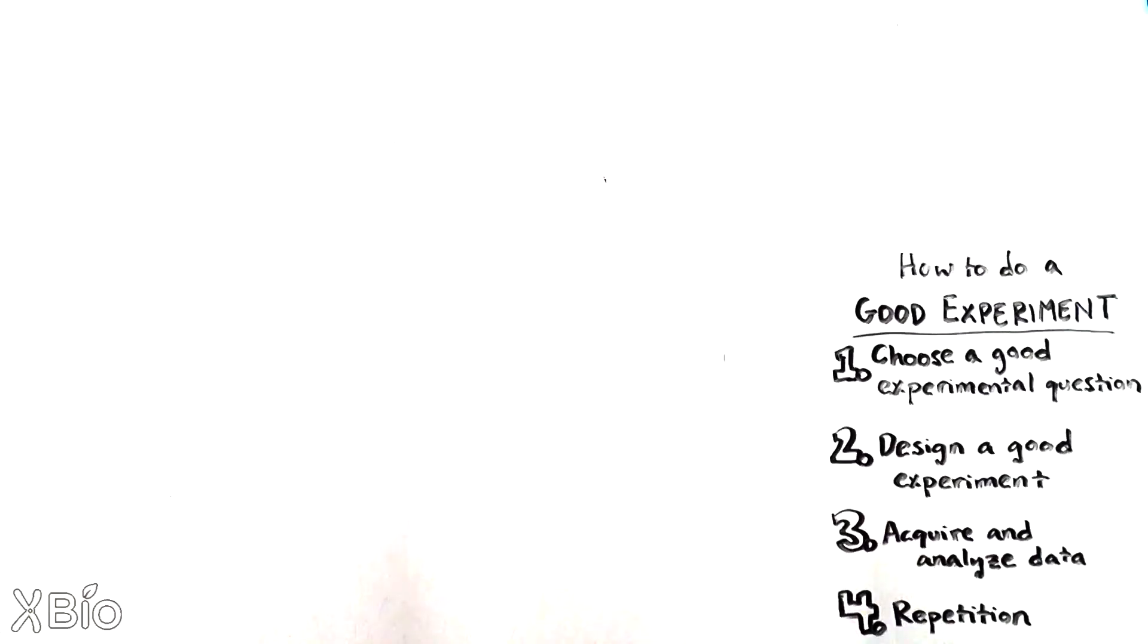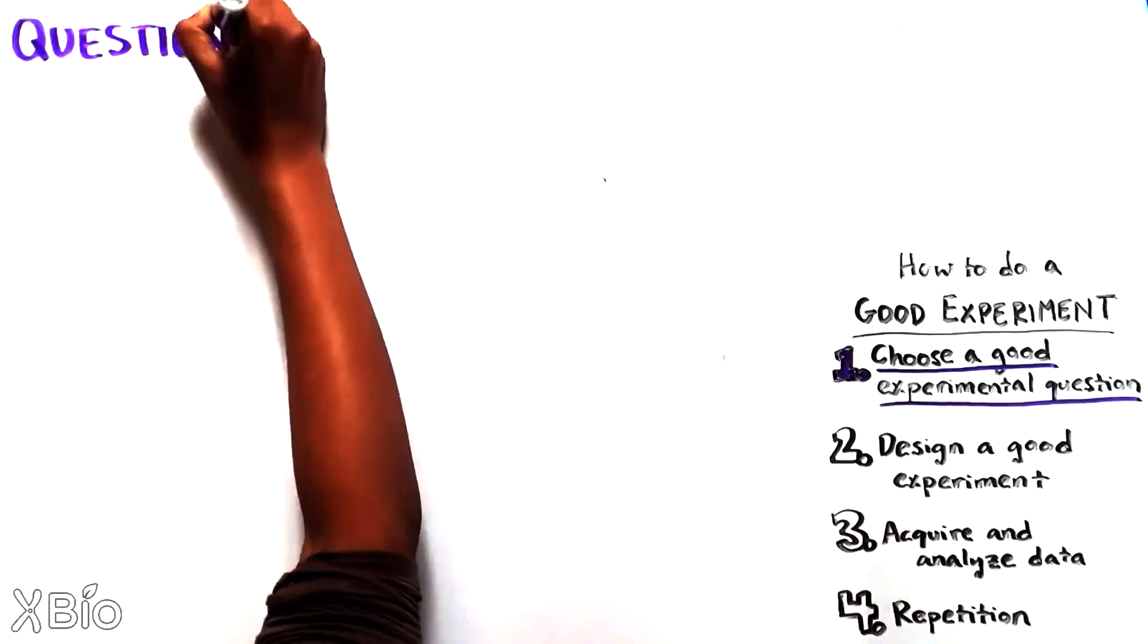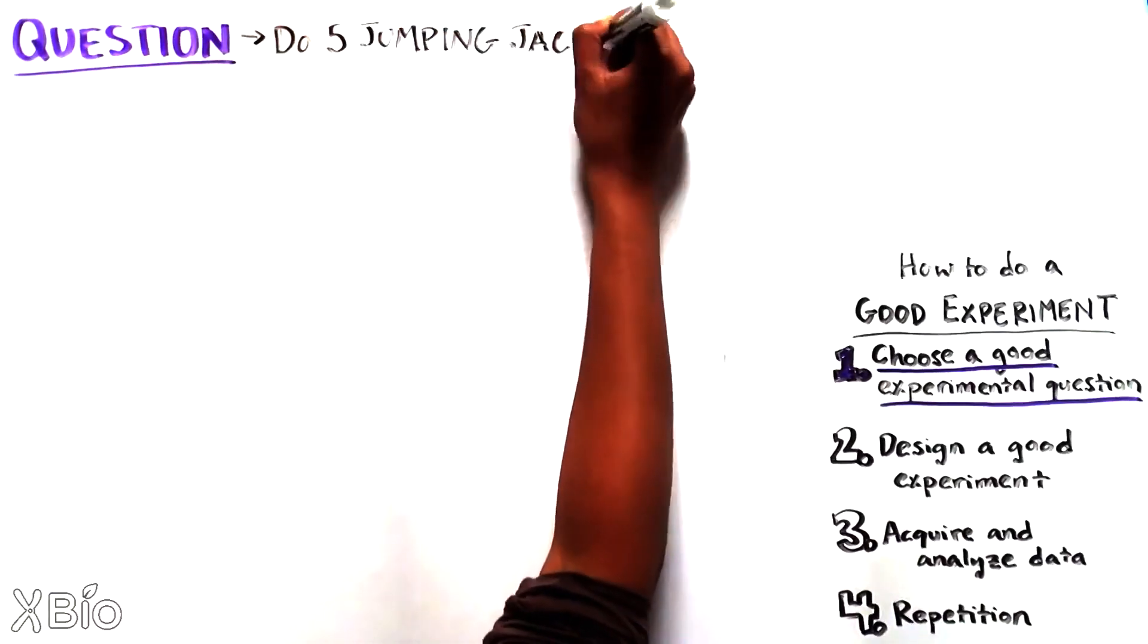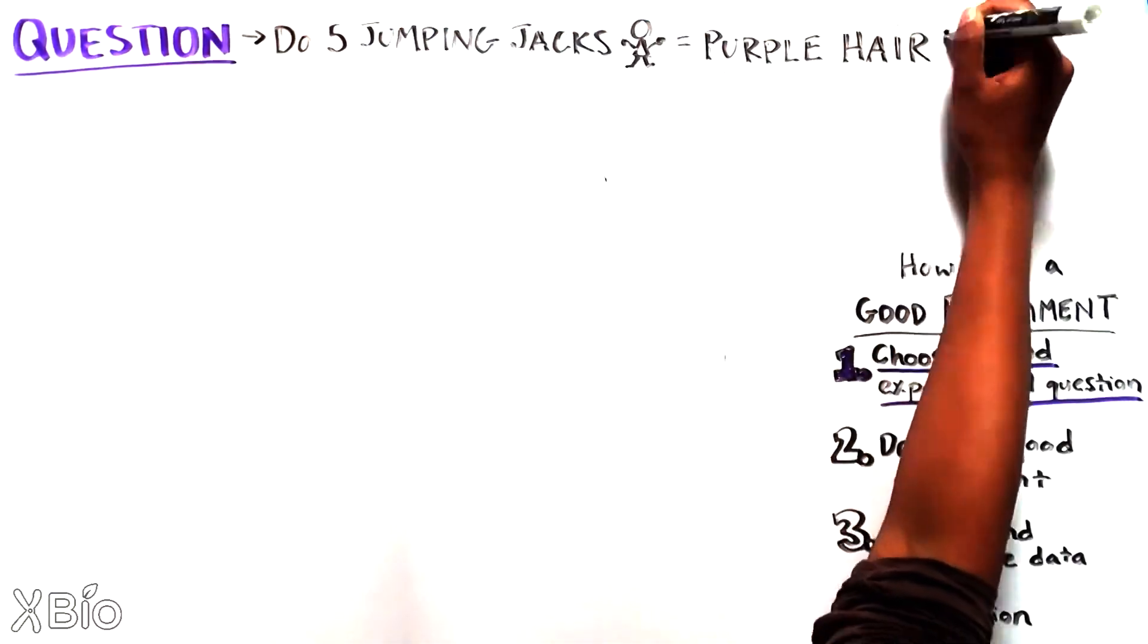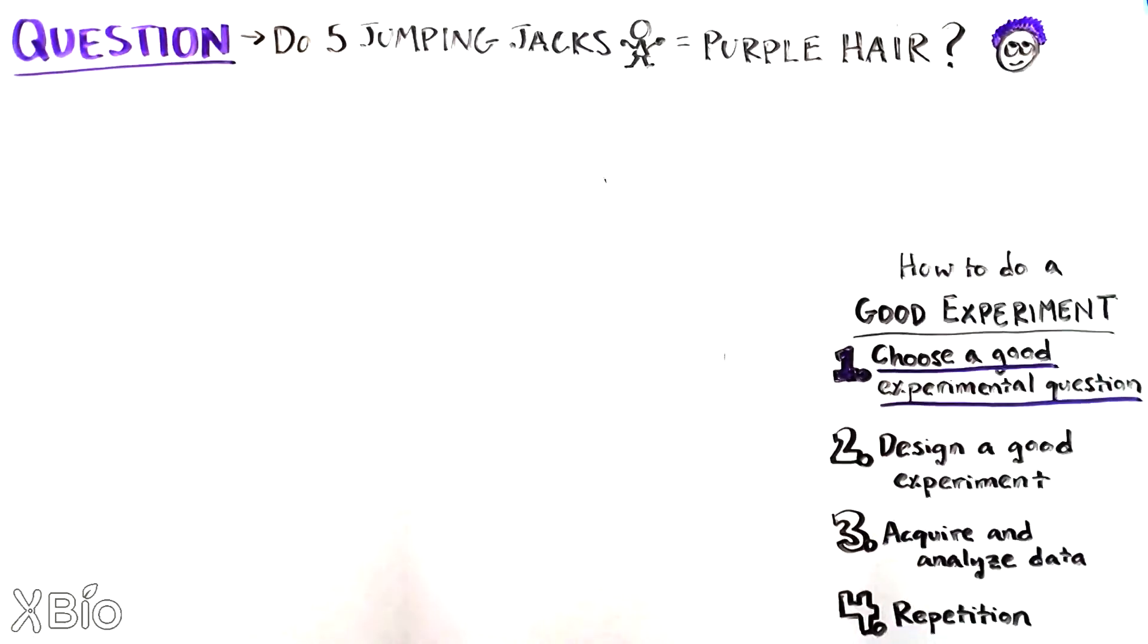The important first step is to choose a particular question we're eager to answer. Let's pick a totally crazy question. If people do five jumping jacks as soon as they get out of bed in the morning, will their hair turn purple?